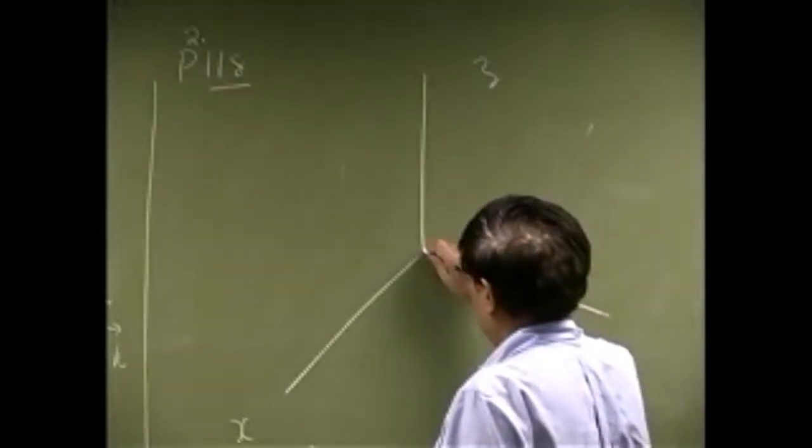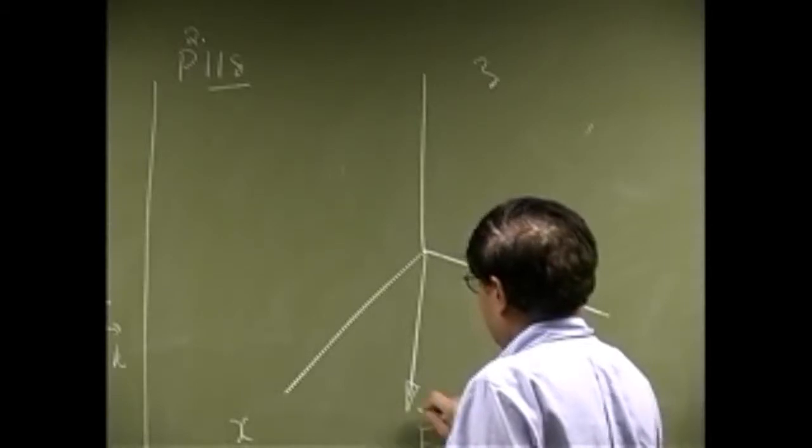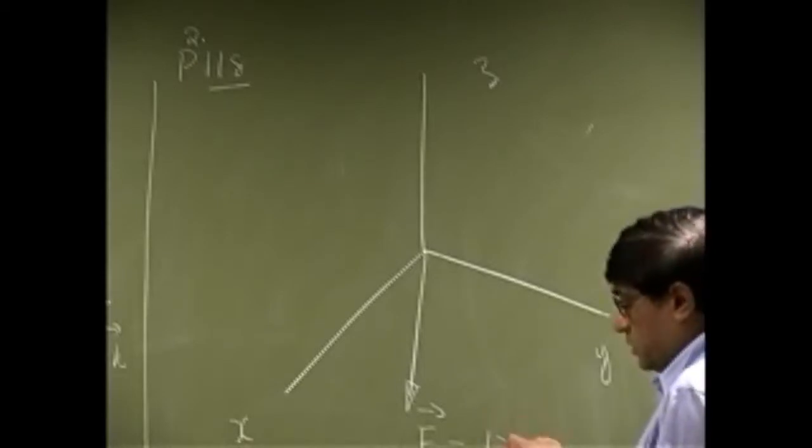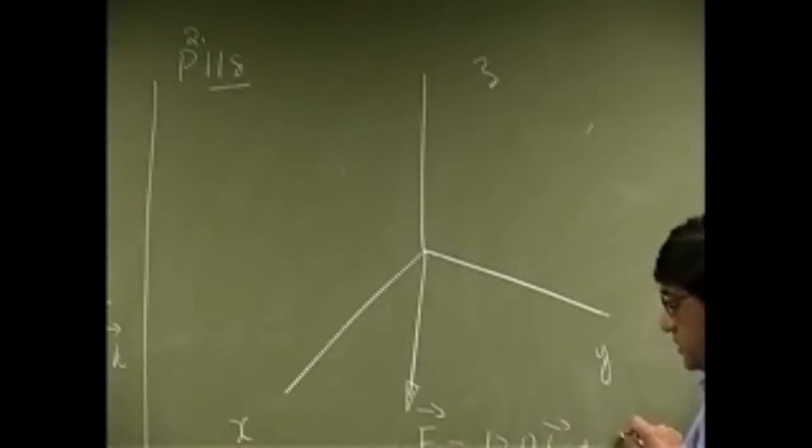Then there is a force here. That's F2, and that's given as 120i plus 90j, then negative 80k.